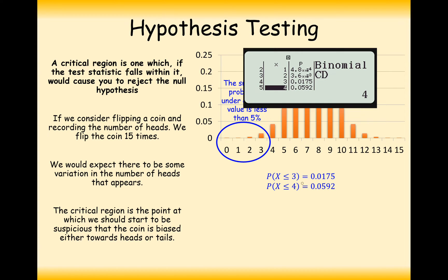You can clearly see that the probability from 4 downwards gives a value of more than 5%, so our critical value is going to be 3, because the probability from 3 downwards is less than 5%. You're always going to be working with a probability of a certain number of successes or fewer, or alternatively at the other end, a certain number of successes or more.